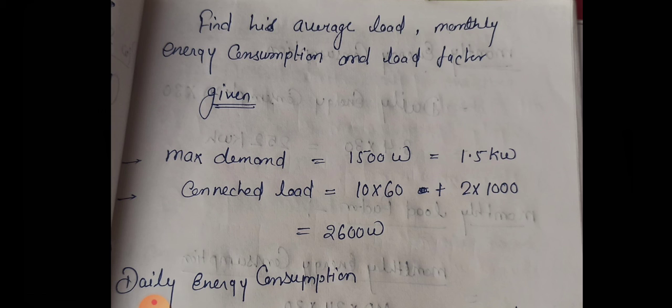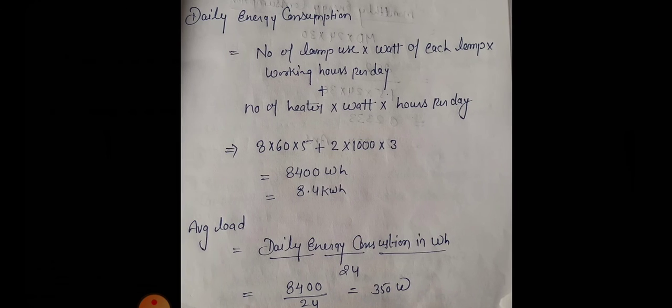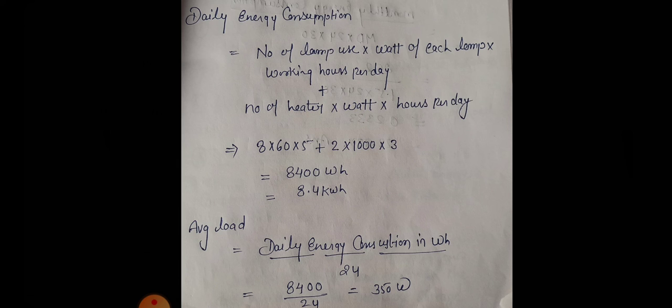What is the daily consumption of electricity? Daily consumption of electricity equals number of lamps used into watt of each lamp into working hours per day.